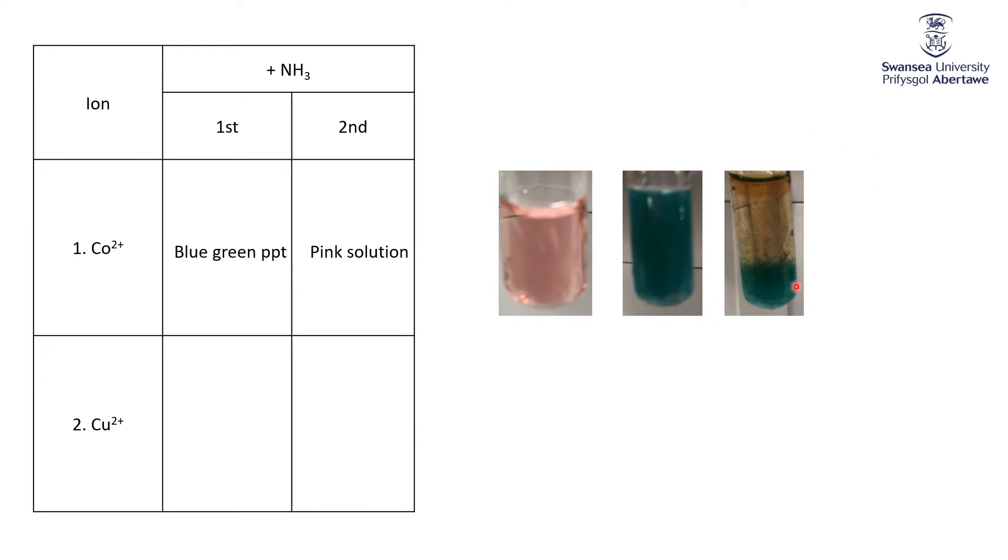So again, you can see there's some of the blue green precipitate that I haven't reacted up yet, but there's some of that pink solution coming back again that is essentially cobalt ions with some ammonia bonded to it, ligands, ammonia ligands bonded and water ligands bonded to it.